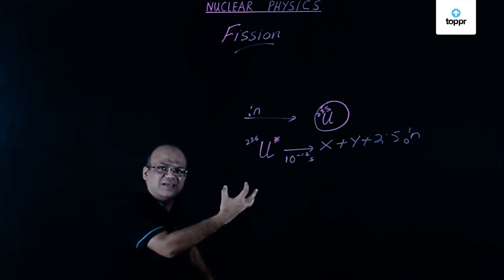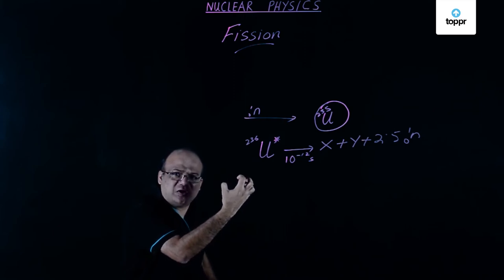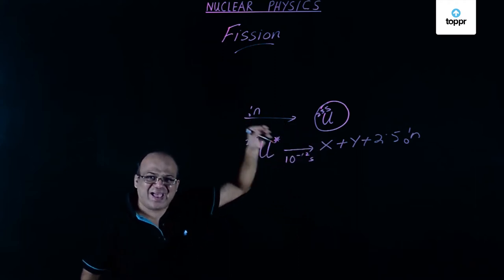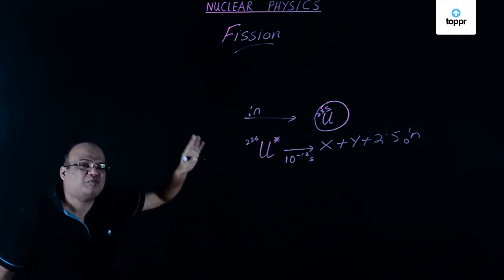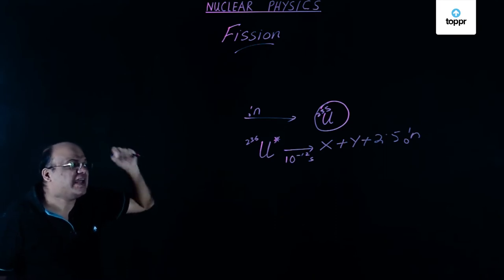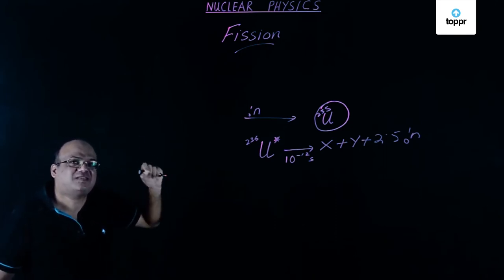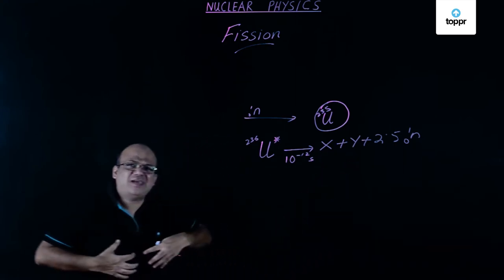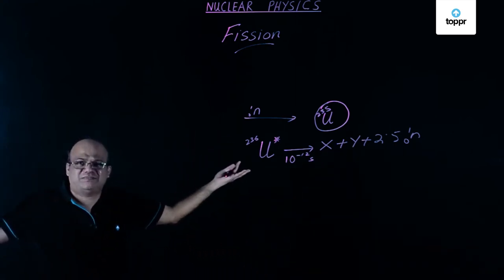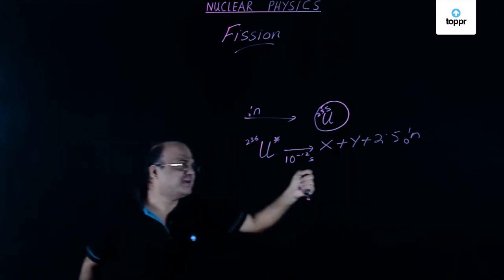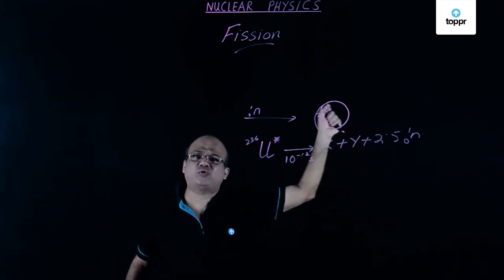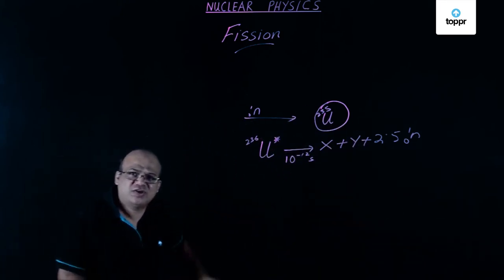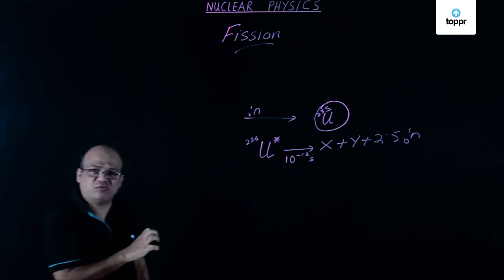But here, this intermediate nucleus breaks up into two parts and produces neutrons — 2.5 neutrons on average in 10 to the power minus 12 seconds. X and Y can be 90 different kinds of nuclei; X and Y are not fixed. Some reactions will get 2 neutrons, other reactions will get 3 neutrons, so the average is 2.5 neutrons.